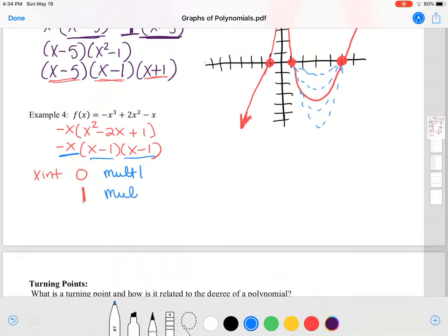My y-intercept is 0. If I plug in 0 for all my x's to see what I get out for y, that's going to give me a 0 for my y-intercept.